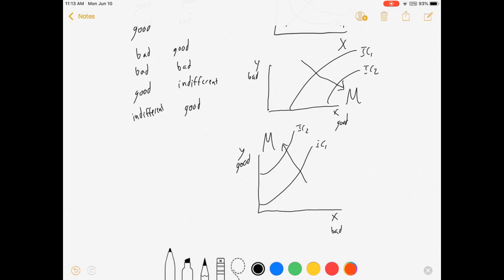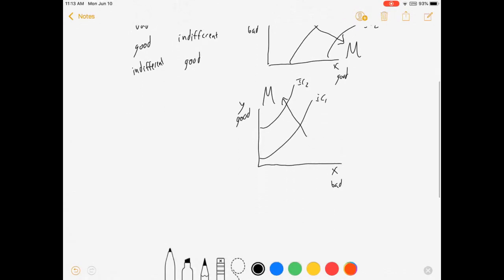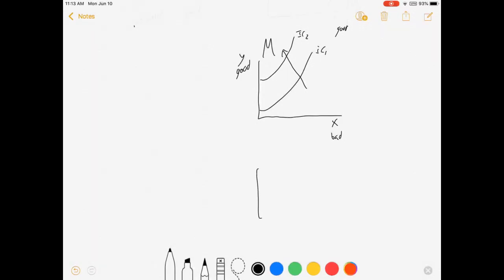Next situation. We're going to have X as a bad and Y as a bad, and so that means our mountain has no X or Y in it. The less of it we have, the better we are. So our utility is increasing as we go towards that mountain.